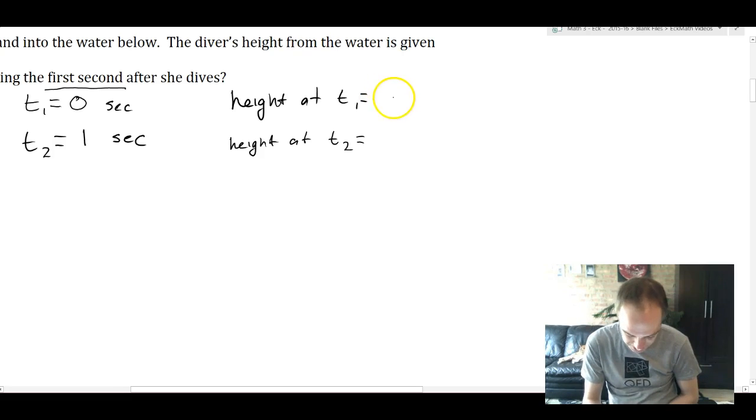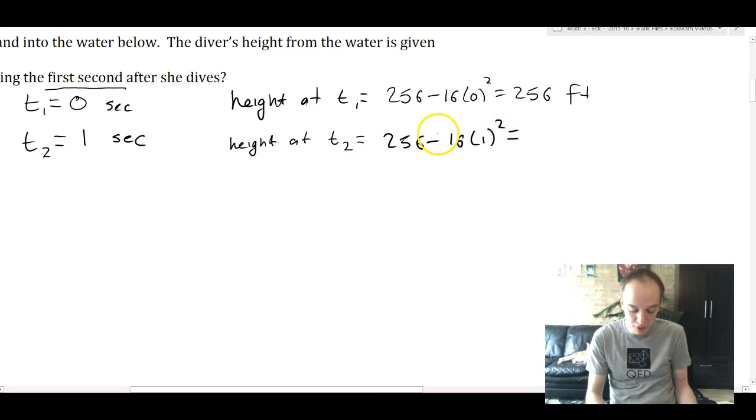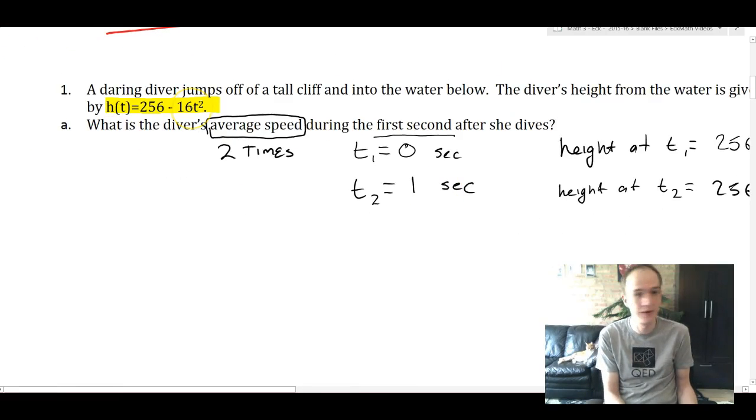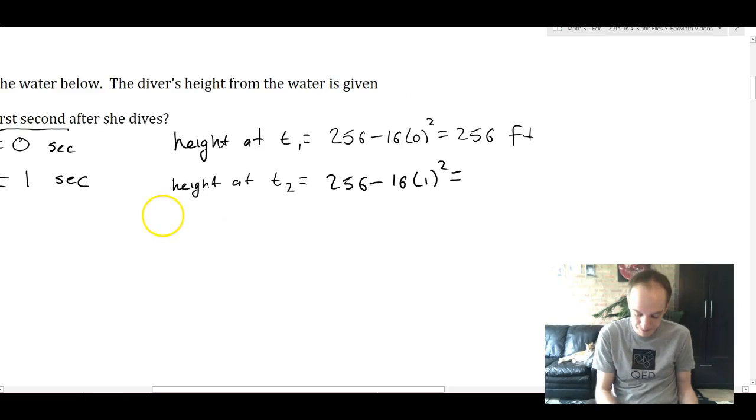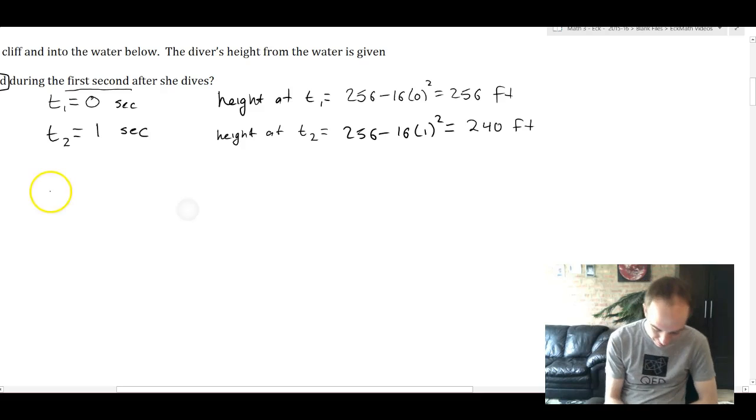Her height above the water at zero seconds, so t1, is just 256 minus 16 times zero squared or 256 feet. This is using the equation that was given in the original story. To find the height at t2, 256 minus 16 times 1 squared equals 240 feet.